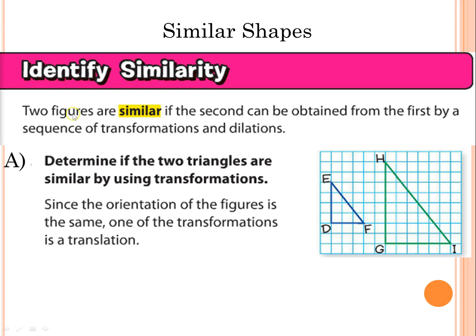Two figures are similar if the second can be obtained by the first by sequence of transformations and dilations. For example, first we want to check to see if these two triangles are similar by transformations. We're going to check to see if the orientations is the same. So that just means this triangle is a right triangle with a right angle in the lower left-hand corner, and we see triangle GHI is a right triangle with a right angle in the lower left-hand corner.